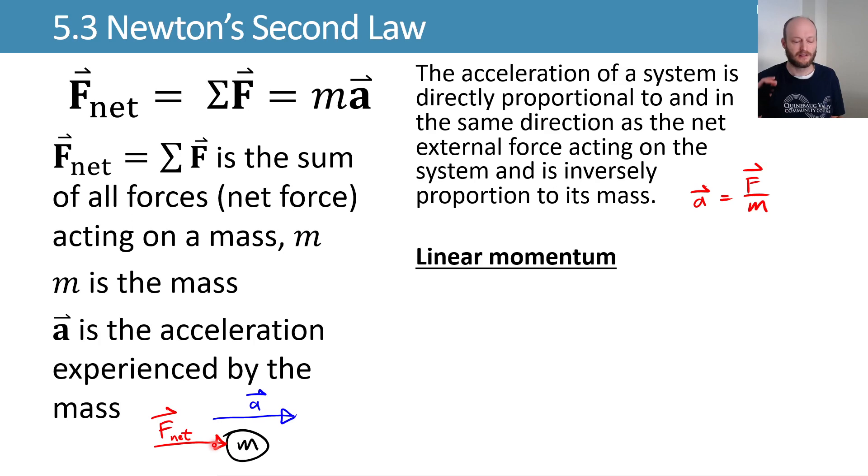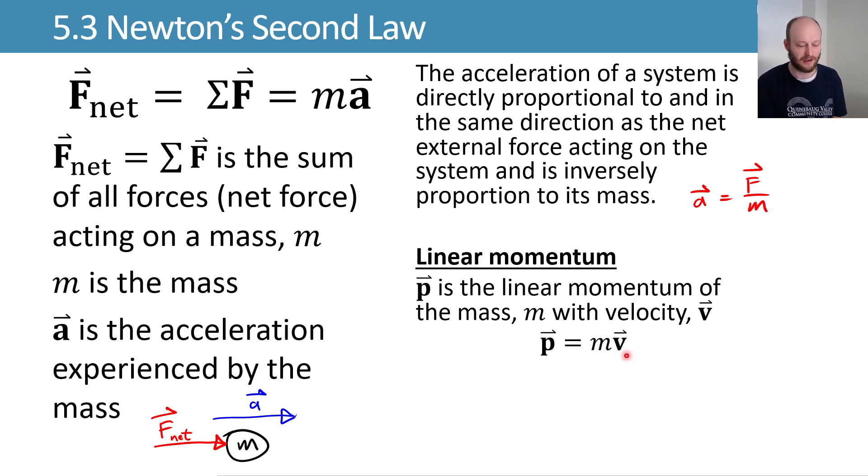Linear momentum is we can take a mass, and if a mass is moving with some velocity v, then it will have some linear momentum that's given by the mass times that velocity. Because it's multiplying by a velocity here, that linear momentum will also be a vector quantity just like velocity is.